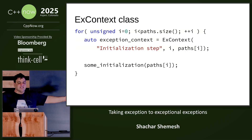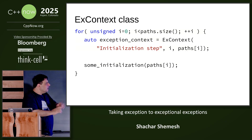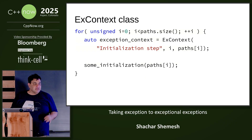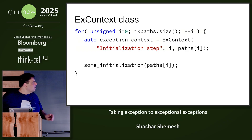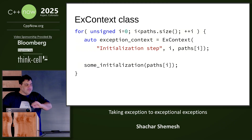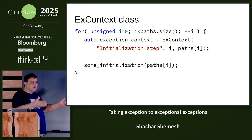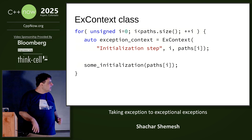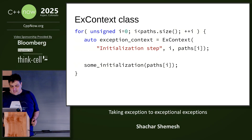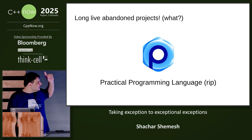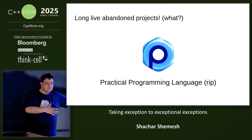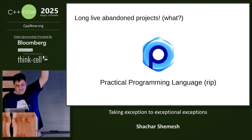So, introducing the exception context class. This is how it works: at interesting points in the program — and it's up to you to decide what an interesting point is — you instantiate a local variable. That's it. On the happy path, that's all you do. You can instantiate multiple of those, nested, no problem. If no exception was thrown, that's all that happened. By the way, this is inspired by work I did when I thought I would develop a programming language. Long live abandoned projects.